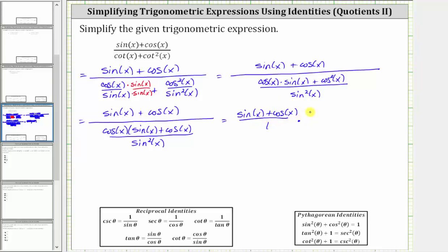and then times the reciprocal of the fraction in the denominator, which is sine squared x over cosine x times the quantity sine x plus cosine x.